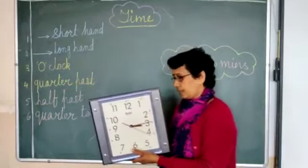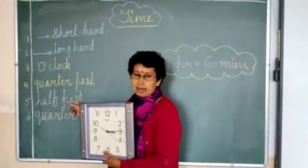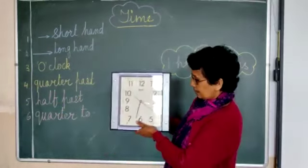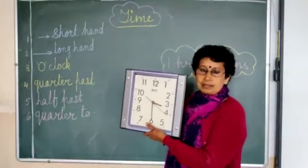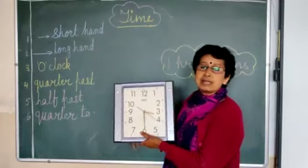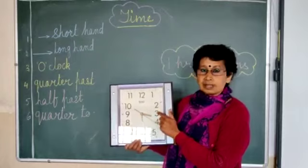Next one is half past. So the bigger hand is on six and the shorter hand is in between three and four. This is your 3:30, half past three.